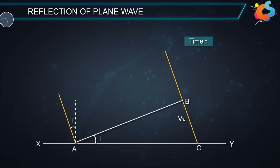At the same time, the secondary wavelet from A will get reflected and travel the same distance V tau in the same medium. To determine the shape of the reflected wave front from A, draw a sphere of radius V tau from point A.